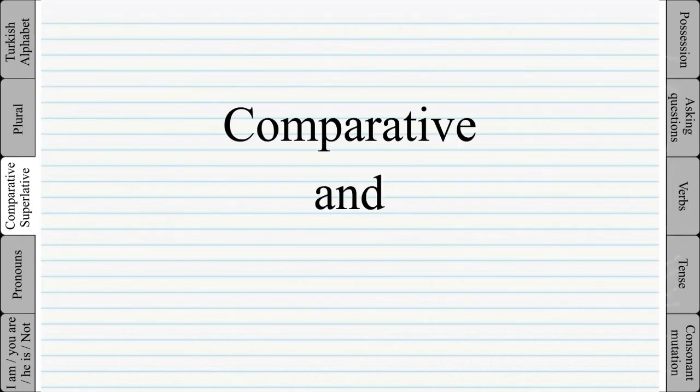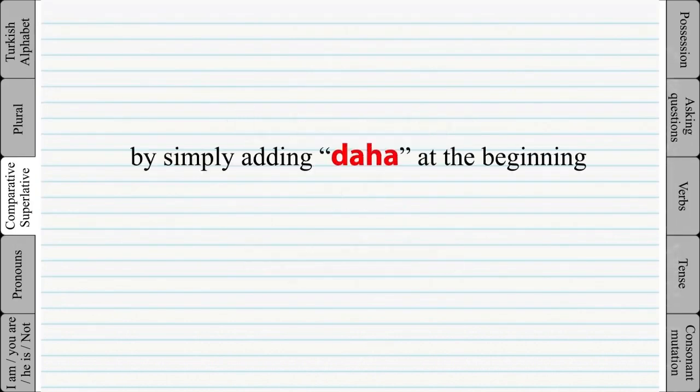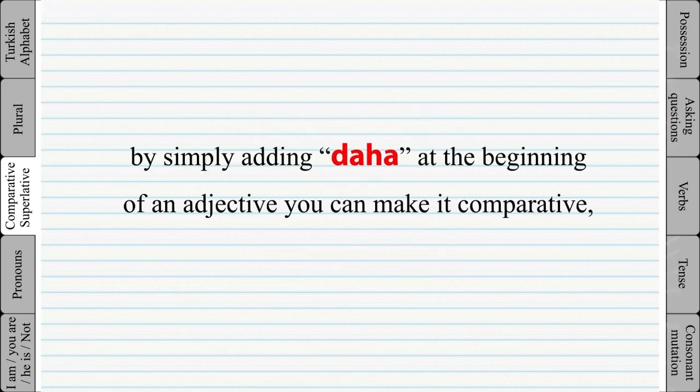For example, comparative and superlative: by simply adding 'daha' at the beginning of an adjective you can make it comparative, and by adding 'en' you can make it superlative.